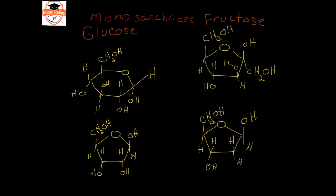Down here are two other very important monosaccharides: ribose, which is important in ribonucleic acid, otherwise known as RNA, and deoxyribose, which is the D in DNA, or deoxyribonucleic acid. Those will play a role when we get to the discussion of DNA. You'll notice that all of these have the ending '-ose.' That ending is a good way to identify sugars, carbohydrates, or saccharides out of a crowd.